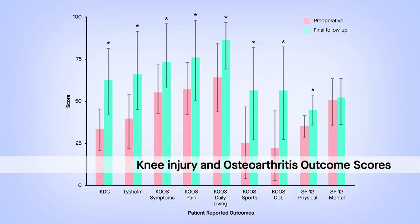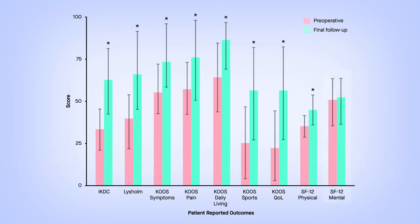Short-form 12 scores for mental health were the only patient-reported outcome that did not improve significantly over the follow-up period.